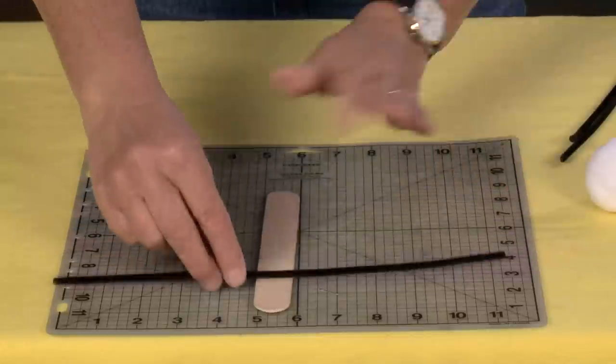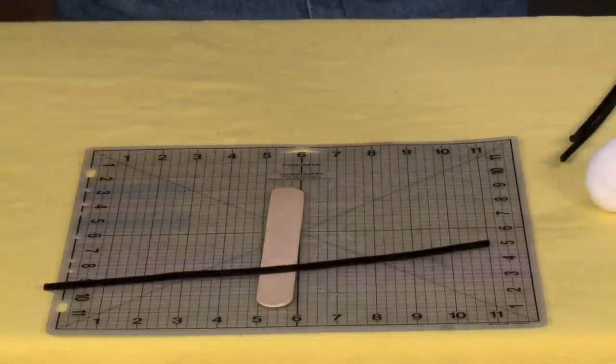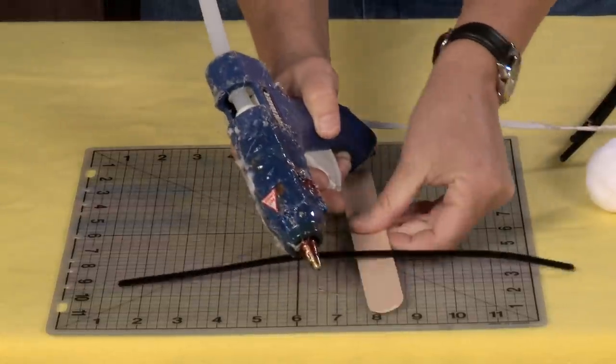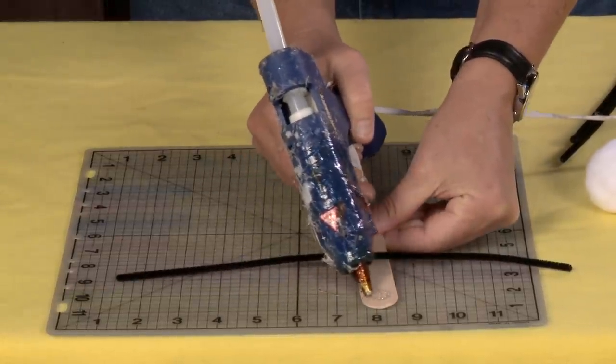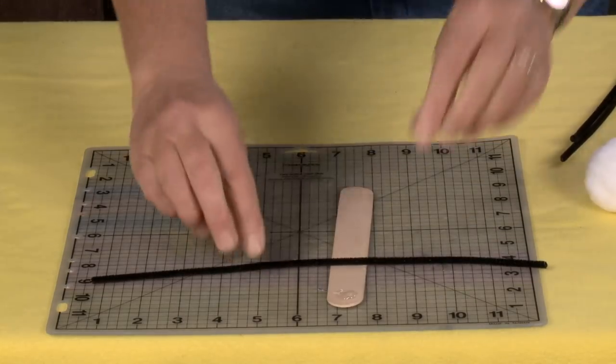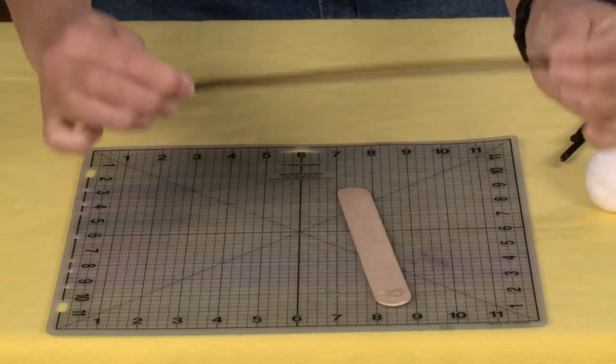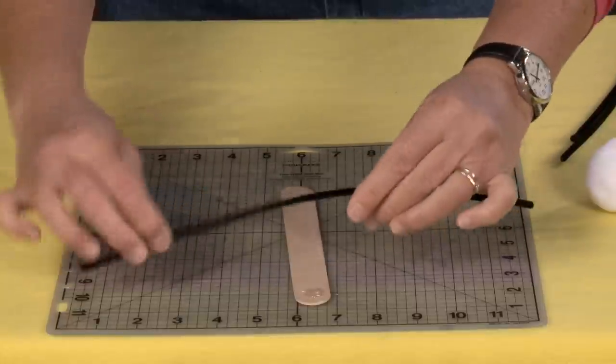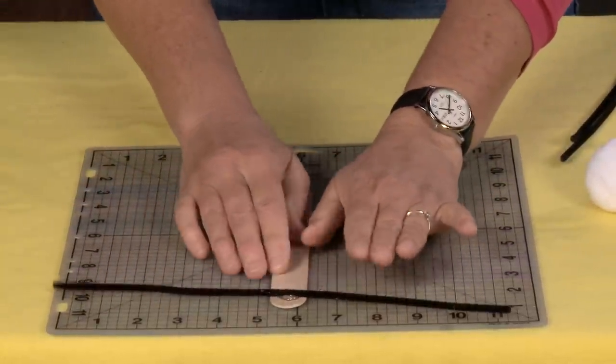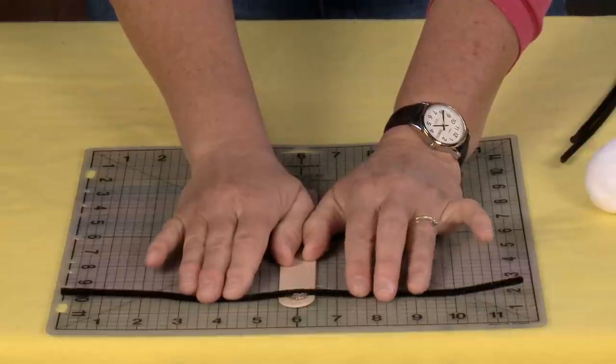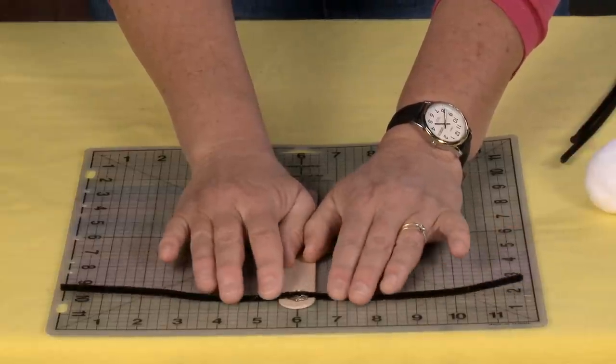First thing we're gonna do is take the pipe cleaner, one of the three, and we are going to put a little bead of glue right here at the top and lay the pipe cleaner, the first pipe cleaner, right down in the middle. You can kind of lay it right there in the middle of your work surface and make sure that you've got it pretty well centered.